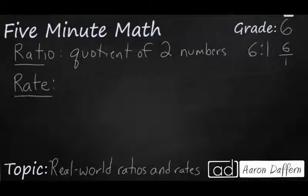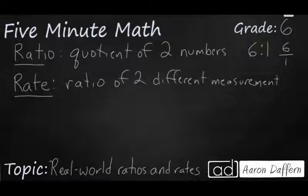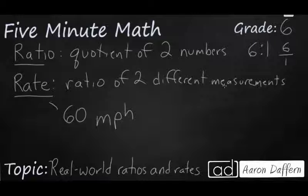Now a rate, on the other hand, is a type of ratio. So it's a ratio of two different measurements. And so typically when we think of a rate, one of the easiest things to think of would be when we're driving our cars. And when we're going down the highway, we always wonder, what's the speed limit? Well, the speed limit is given to us in MPH. And so when we have 60 MPH, that is a rate because we have a ratio of two different measurements. We have miles per hour.